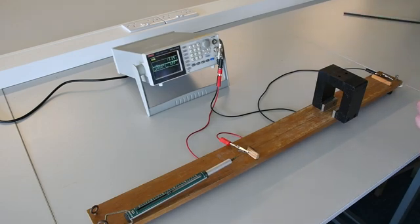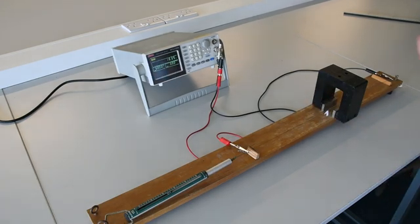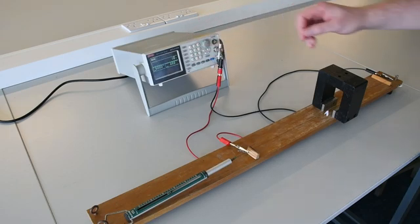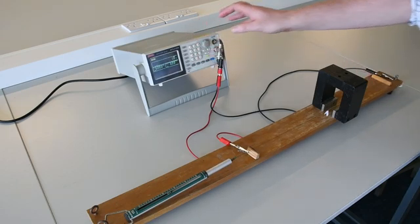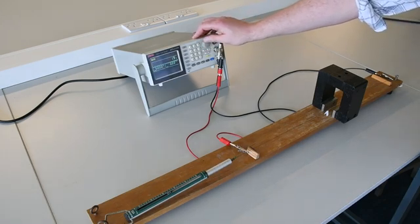We can put our paper rider onto our string and start with a low frequency, turn on our signal generator and gradually begin to increase the frequency until we find the fundamental frequency.